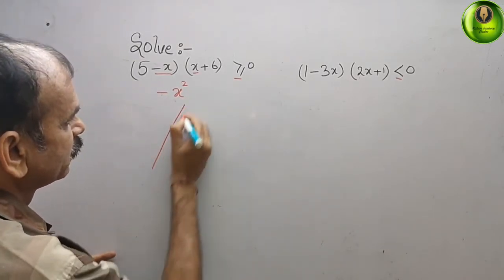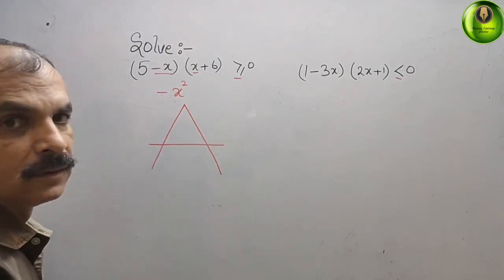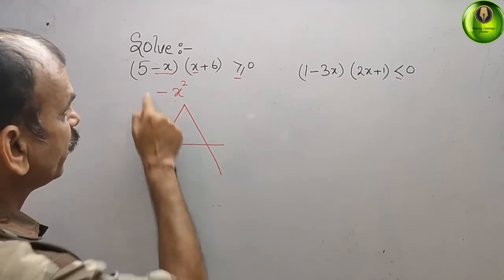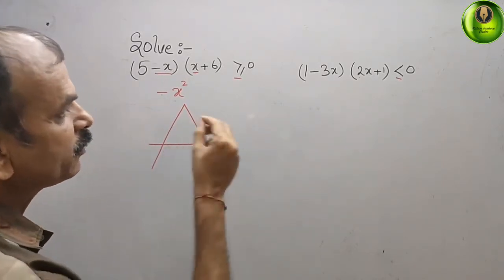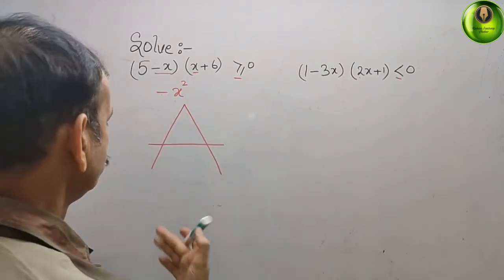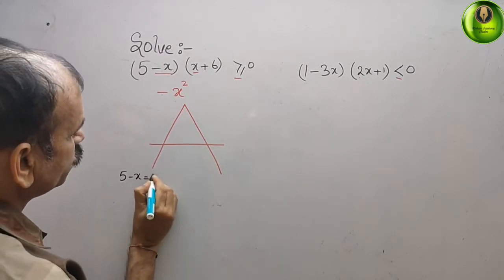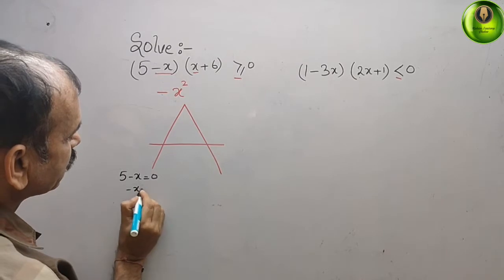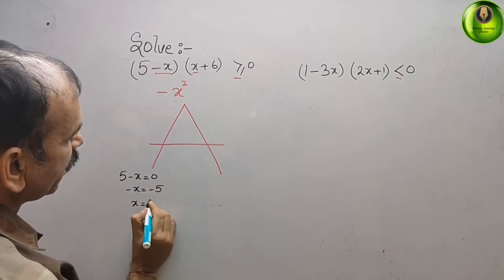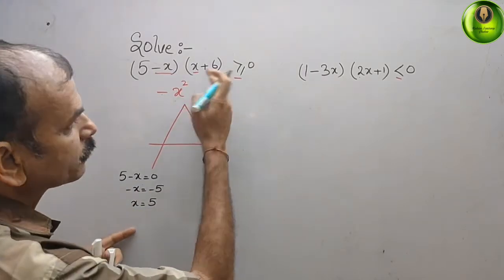Now we will draw our graph like this. We will find the values: 5 minus x equals 0, and x plus 6 equals 0. For the first factor, 5 minus x equals 0 gives minus x equals minus 5, so x equals 5.